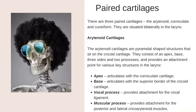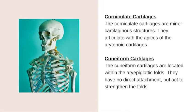Paired cartilages: there are three paired cartilages — the arytenoid, corniculate and cuneiform — situated bilaterally in the larynx. The arytenoid cartilages are pyramidal-shaped structures that sit on the cricoid cartilage; they consist of an apex, base, three sides and two processes — the vocal process and the muscular process — and provide an attachment point for various key structures in the larynx. The corniculate cartilages are minor cartilaginous structures that articulate with the apex of the arytenoid cartilages. The cuneiform cartilages are located within the aryepiglottic folds; they have no direct attachment but act to strengthen the folds.